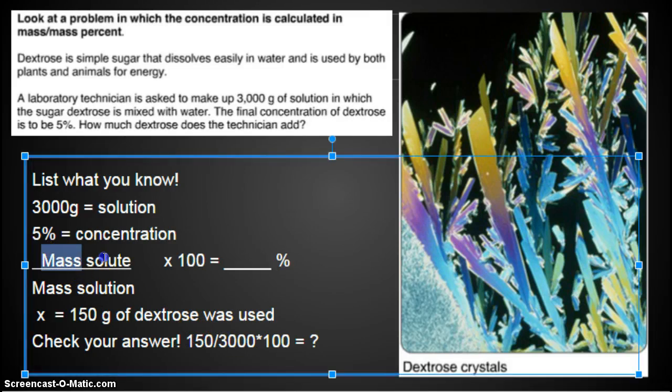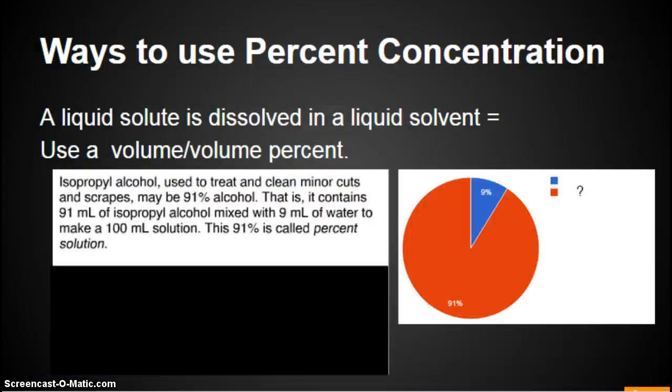Put it back in here. So we said we found 150 grams. Divide that by 3,000, times it by 100, and what should you get? You should get 5 percent. So you can check your answer on this one. It's a good thing to do. So now we're going to look at another way to use percent concentration.